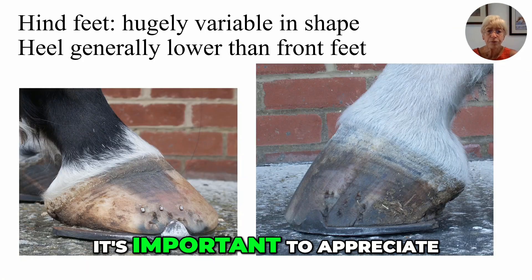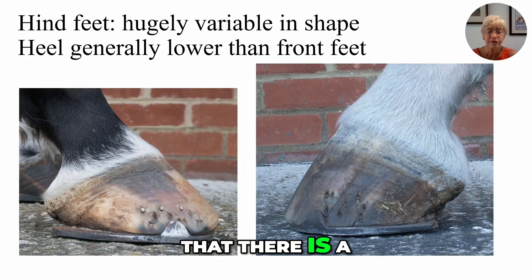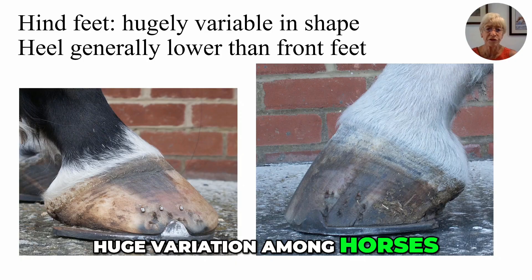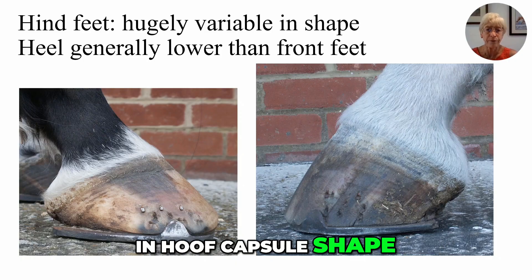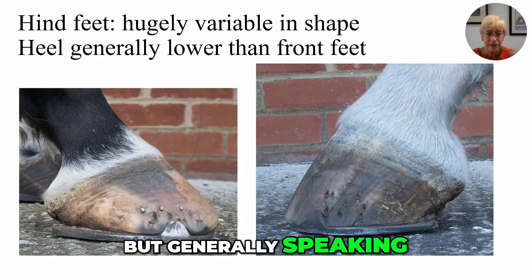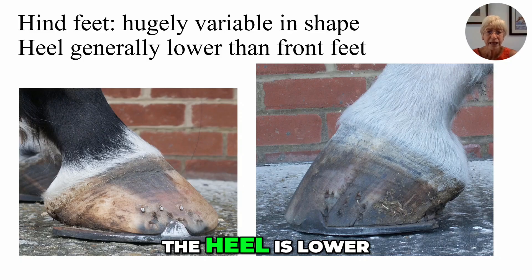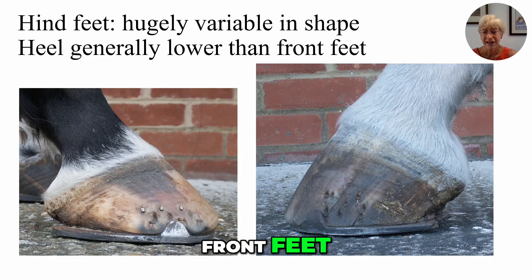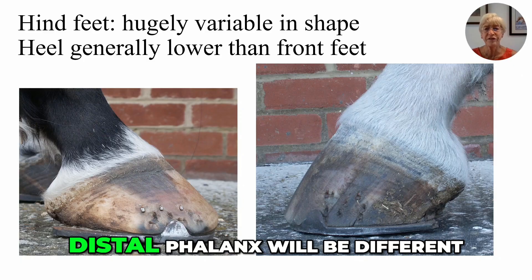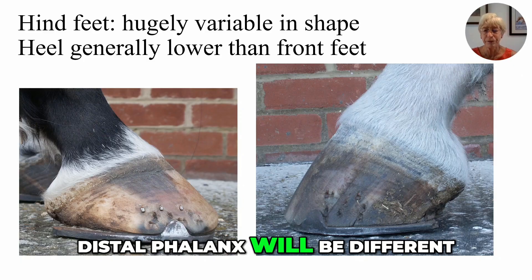It's important to appreciate that there is a huge variation among horses in the hoof capsule shape of hind feet. But generally speaking, the heel is lower than that of the front feet. As a result, the orientation of the distal phalanx will be different.